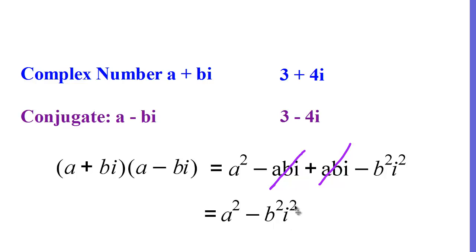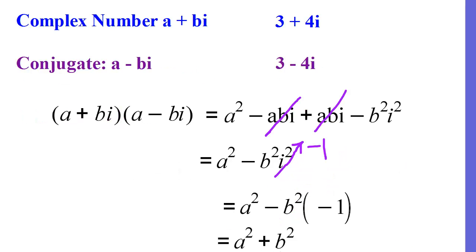Those middle terms cancel out, leaving us with a squared minus b squared i squared. From imaginary numbers, the definition of i squared is negative 1, because the square root of negative 1 equals i. So if i squared equals negative 1, the expression becomes a squared plus b squared. When we multiply a complex number by its conjugate, we end up with just a real number in the form a squared plus b squared.